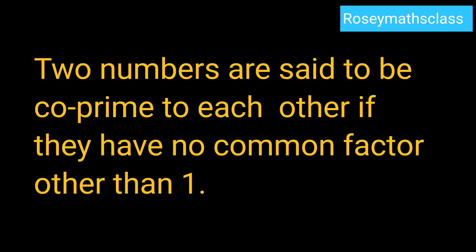So two numbers are said to be co-prime to each other if they have no common factor other than 1. This is what you would learn in 5.3. Also there are some problems given that we will be doing in some other video.